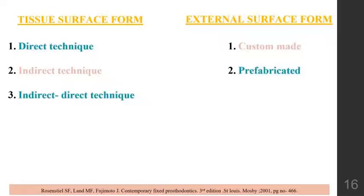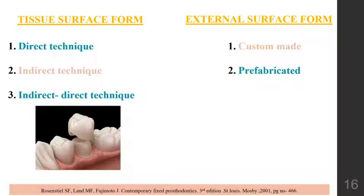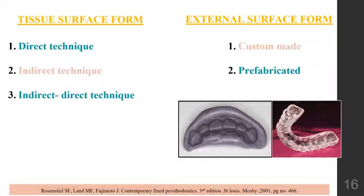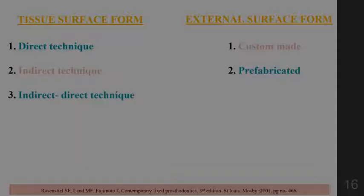Regarding techniques, there is a tissue surface form and an external surface form. The tissue surface form simulates the prepared tooth structure and surrounding structures and is divided into three categories: direct technique, indirect technique, and indirect-direct technique. The external surface form creates the external contour of the restoration and can be custom-made or prefabricated.